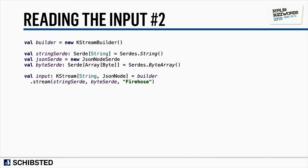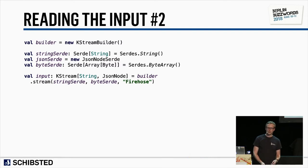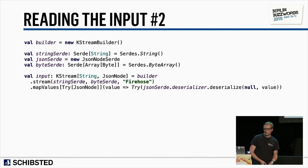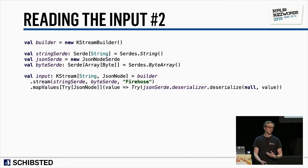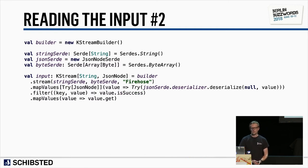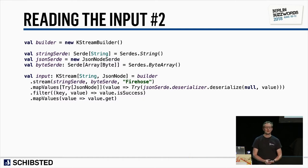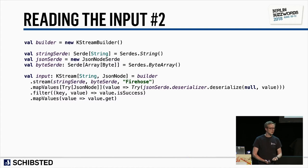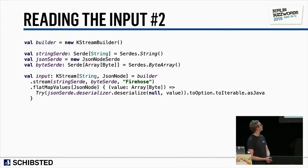Instead of using the JSON node SERDE, we use a byte SERDE. Then we map the values ourselves, wrapping in a try-catch the Scala functional way, and only include those values that actually parse. We add a filter to get successful parse results. When there's a filter and a map, there's also a flat map — and luckily Kafka Streams provides that, making it a little simpler.